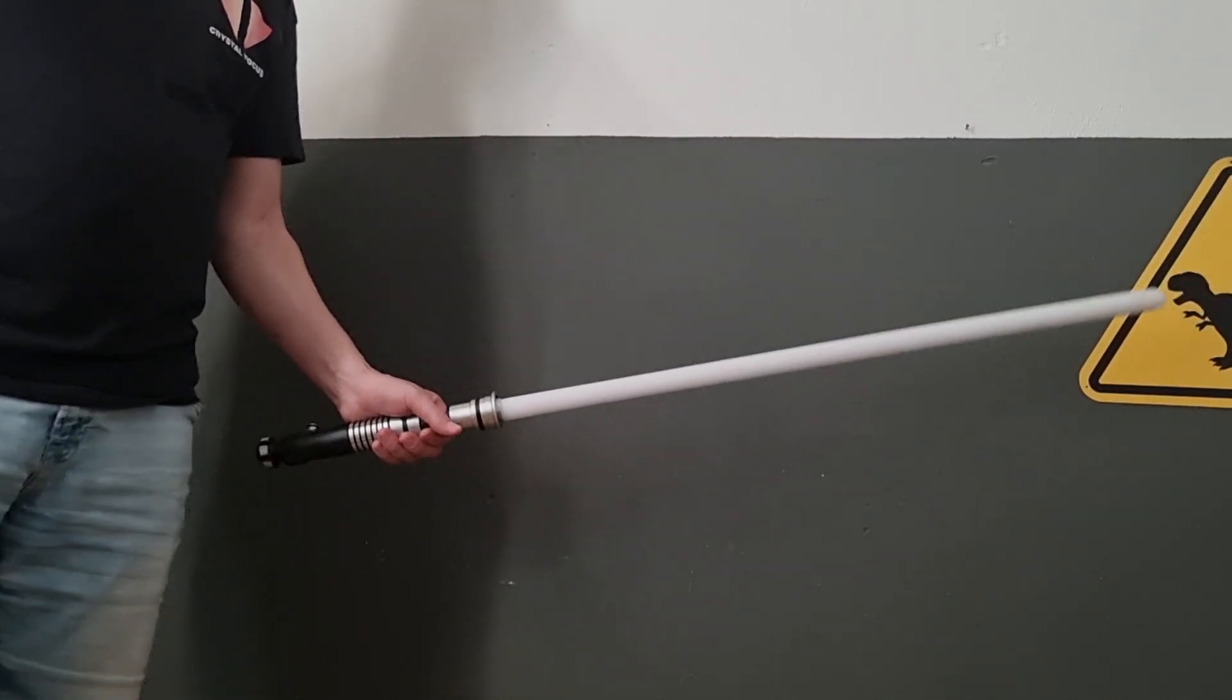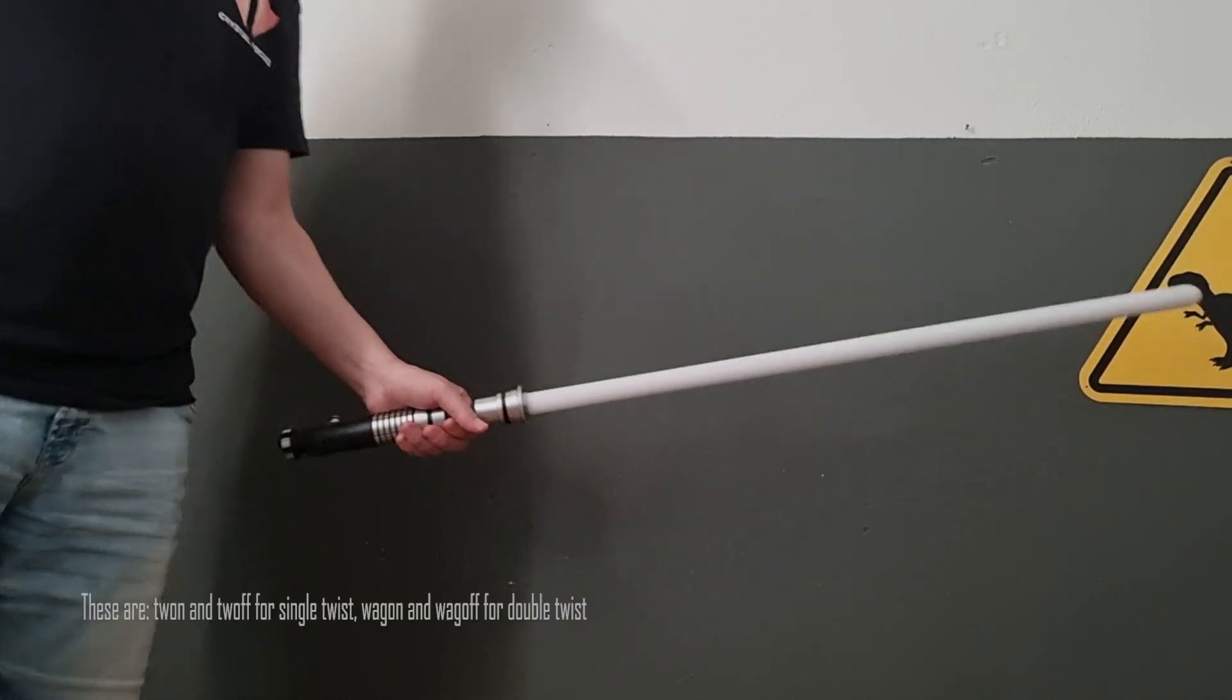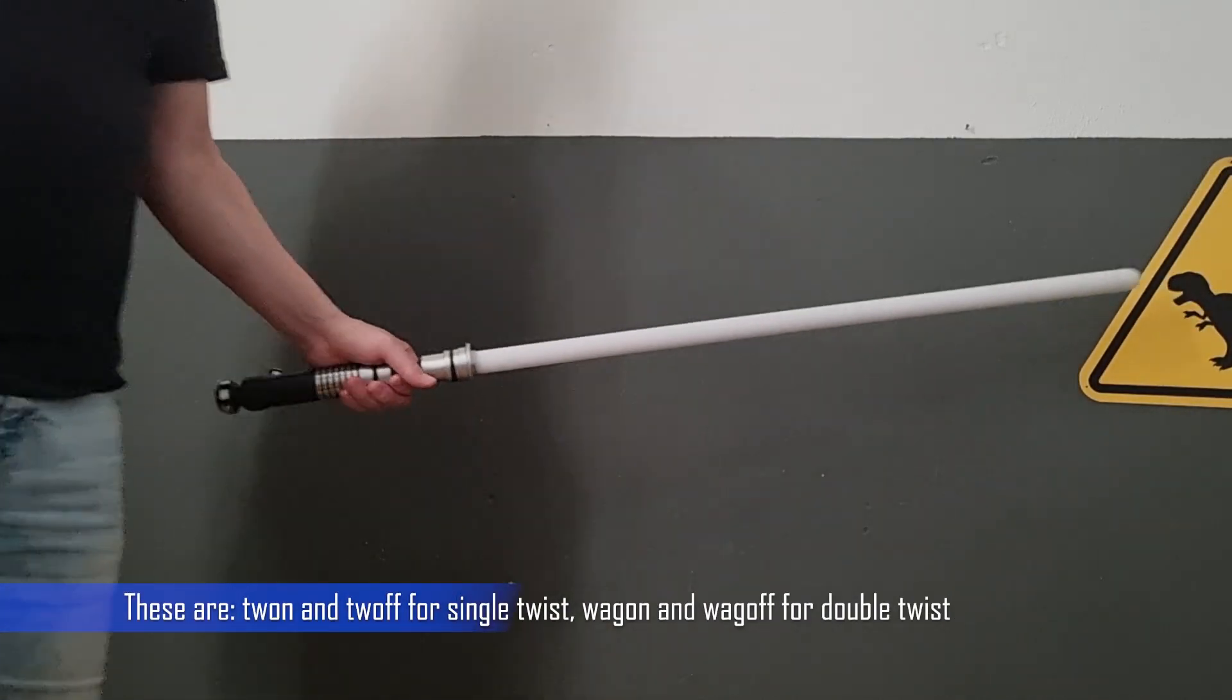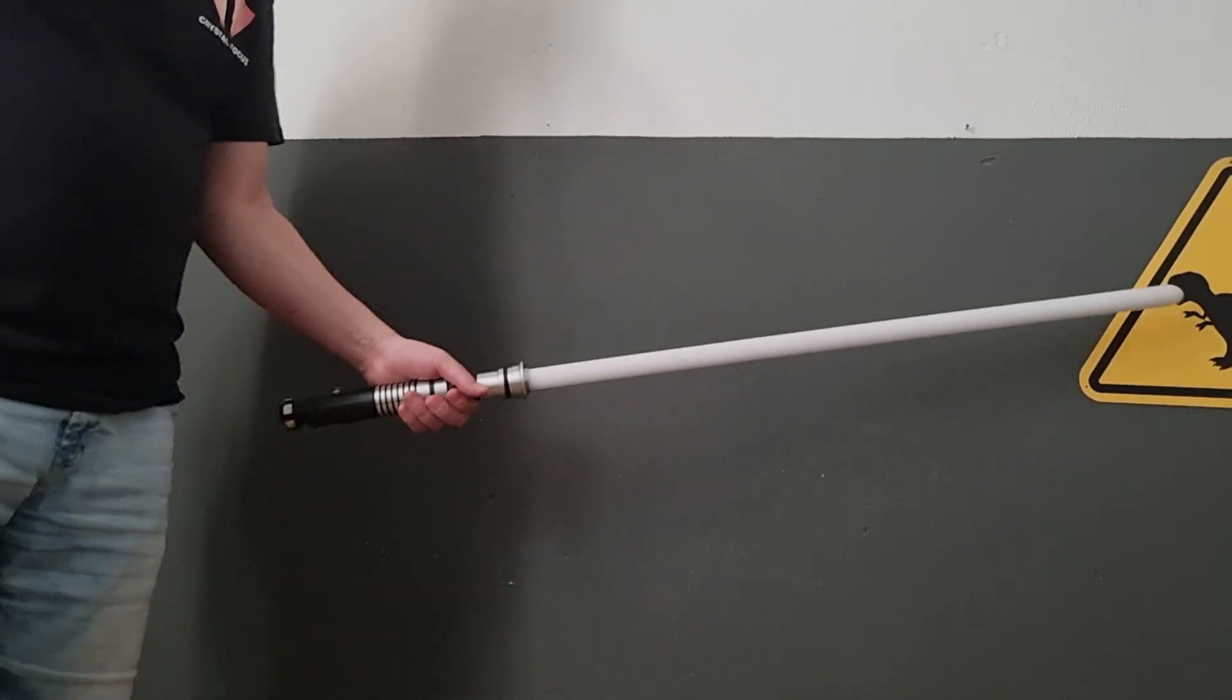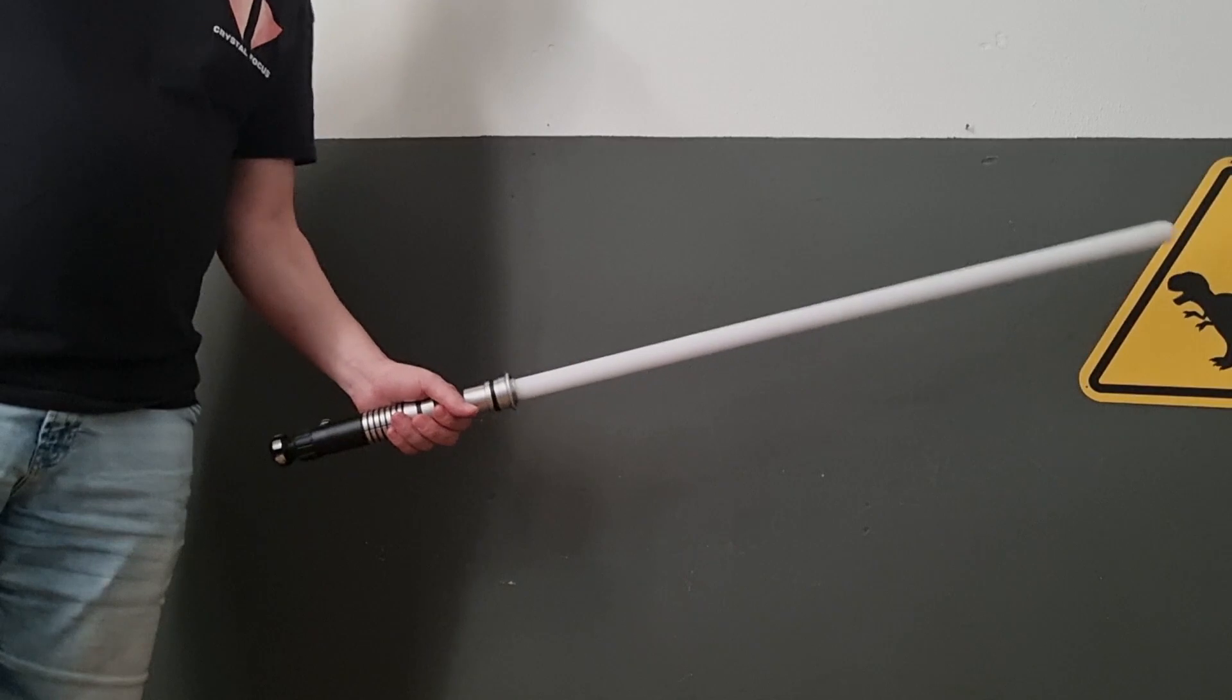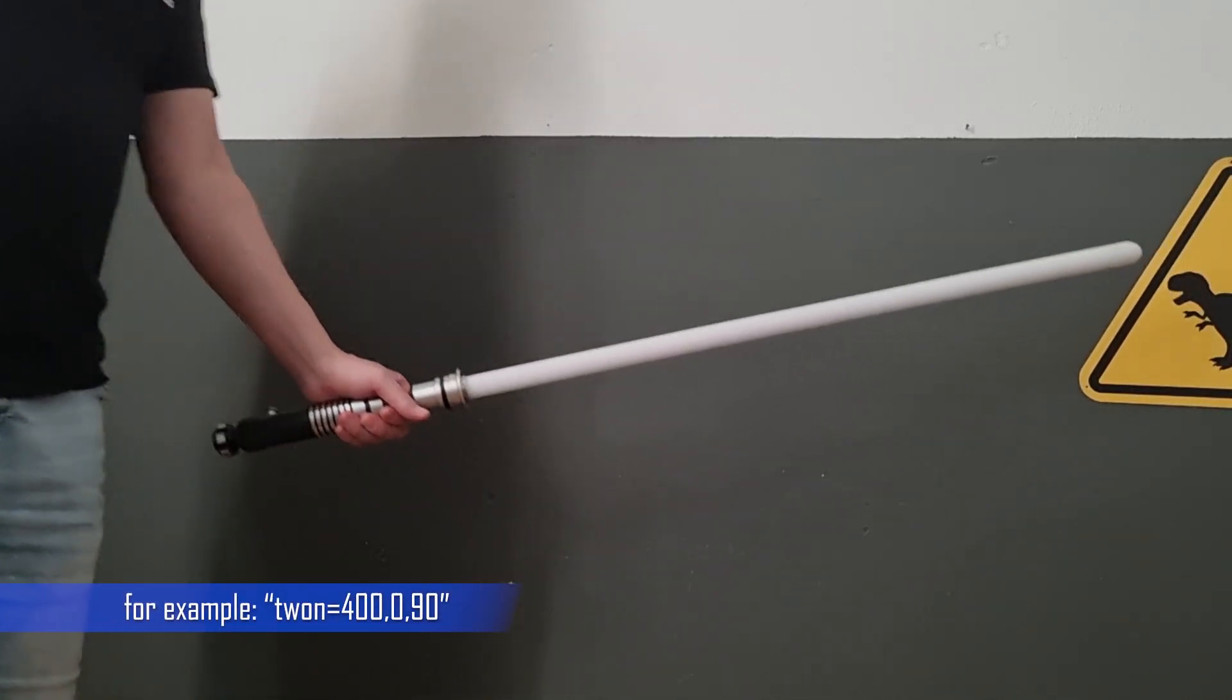You can use the parameters that control the twist on twist off function to achieve this. Both the single twist on or the double twist on and off parameters use the same setup and they consist of three numbers.